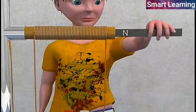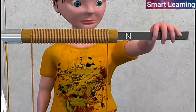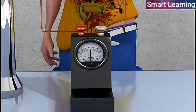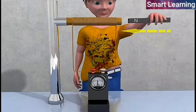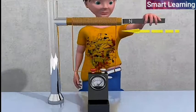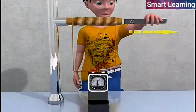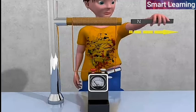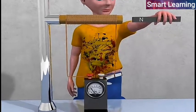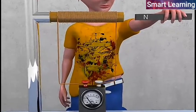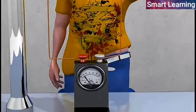If the motion of the magnet is stopped, the galvanometer shows no deflection. The current in coil flows as long as the magnet is moving. If the north pole of the magnet is moved away from the coil, the current flows in a direction opposite to the previous case and the galvanometer shows deflection towards the left.